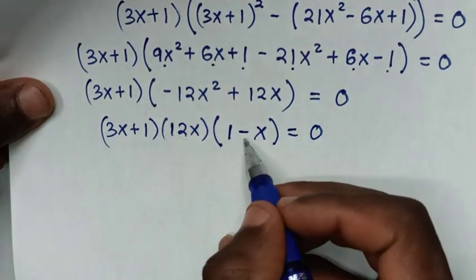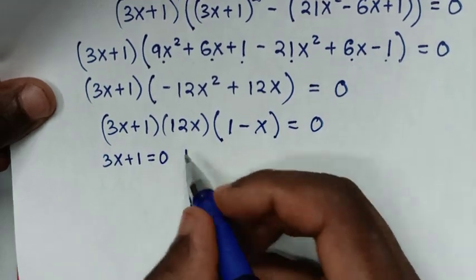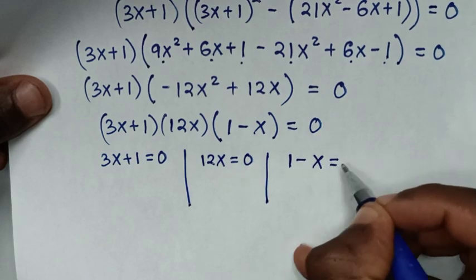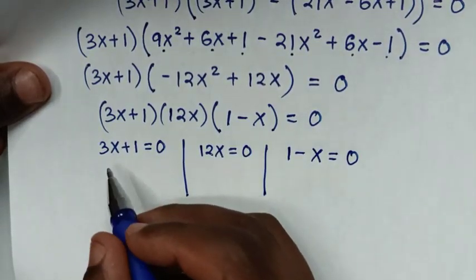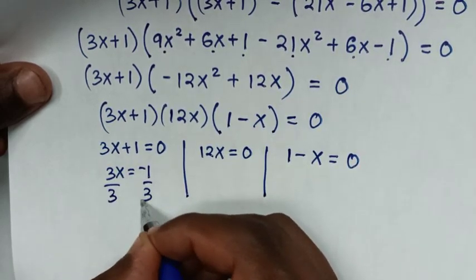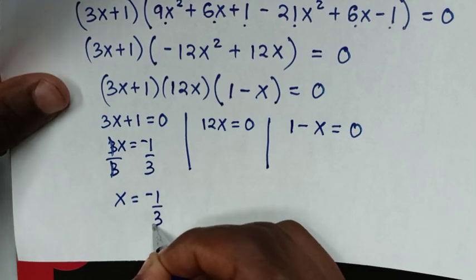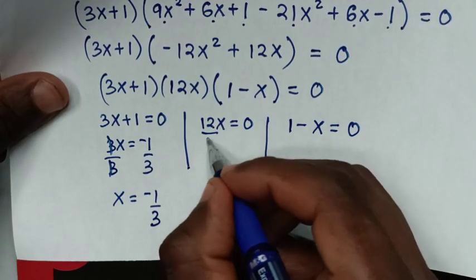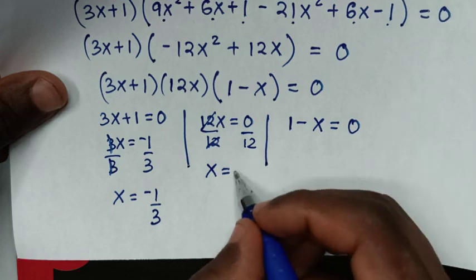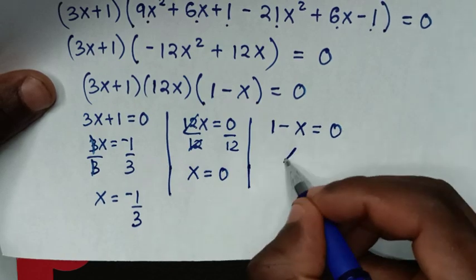From here we have three solutions. The first is 3x+1 equals 0, giving 3x equals negative 1, so x equals negative 1 over 3. The second is 12x equals 0, so x equals 0. The third is 1 minus x equals 0, so x equals 1.